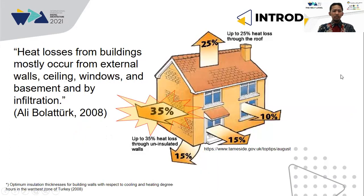When we talk about heat loss, heat losses from buildings mostly occur from external walls, ceilings, windows, and basements, and also by infiltration. Interestingly, 35% of heat loss occurs through uninsulated walls. This is important for us to make buildings with good insulation.